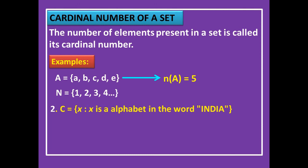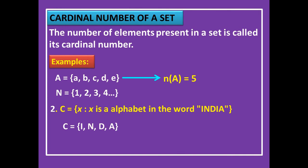Let us take another example to find the cardinal number. C = {x : x is an alphabet in the word INDIA}. INDIA has five letters but 'I' is repeated. In a set we don't write repeated letters, so C = {I, N, D, A}. There are only 4 elements, therefore n(C) = 4.